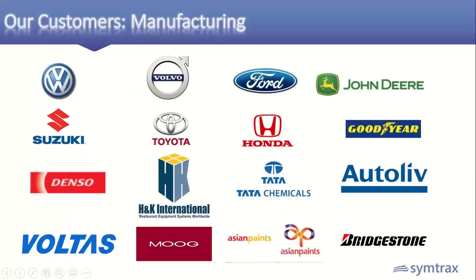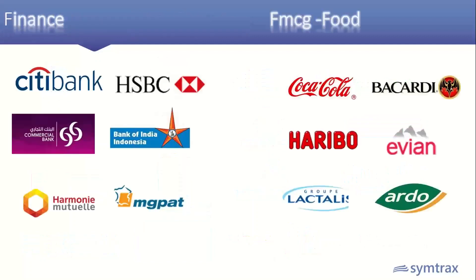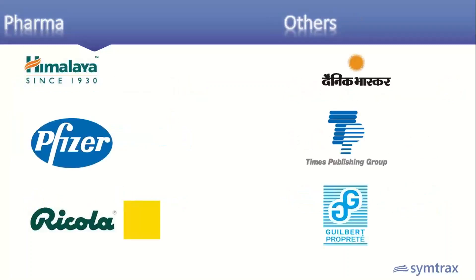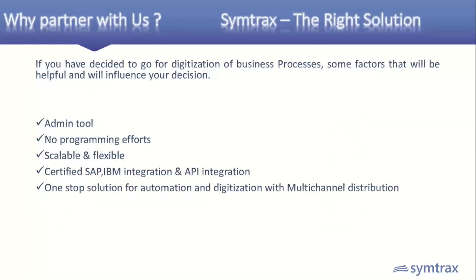We have 3,000-plus customers and we are not an industry-specific solution provider. In manufacturing we serve customers like Volkswagen, Volvo, Asian Paints, and Tata Chemicals. In finance, customers like Citibank and HSBC. In FMCG and food, customers like Coca-Cola and Haribo. In pharma, customers like Himalaya. In other industries, customers like Times Publishing Group. If you decide to pursue digitization, Compleo acts as an admin tool — no programming required — with SAP and IBM certified integrations, and API connectors for other ERPs. It's a one-stop solution for automation and digitization with multi-channel distribution.